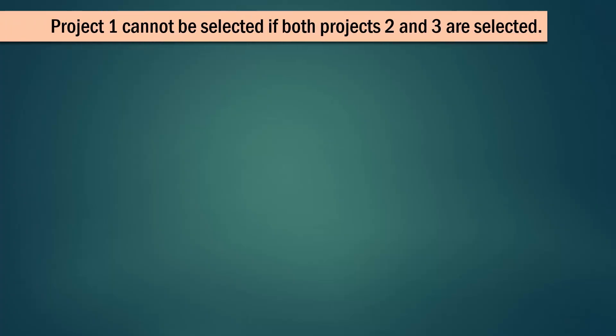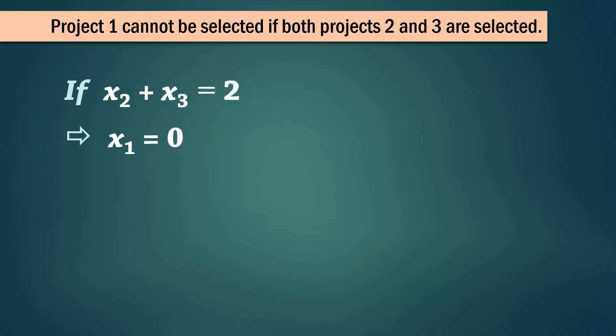Next, project 1 cannot be selected if both 2 and 3 are selected. In other words, project 1 is mutually exclusive with 2 and 3 together. This means that if x2 + x3 = 2, then x1 must equal 0. In other words, x1 + x2 + x3 ≤ 2.